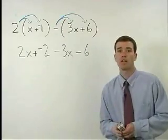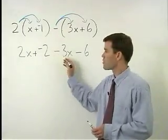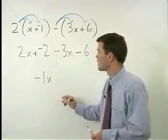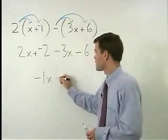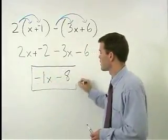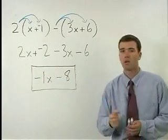Now we just combine like terms. 2x minus 3x is negative 1x. And negative 2 minus 6 is negative 8. So our answer is negative 1x minus 8.